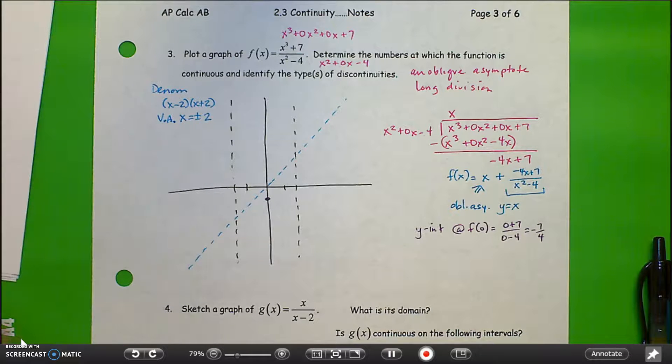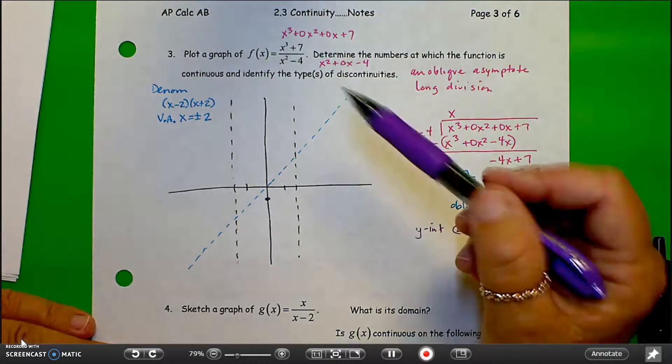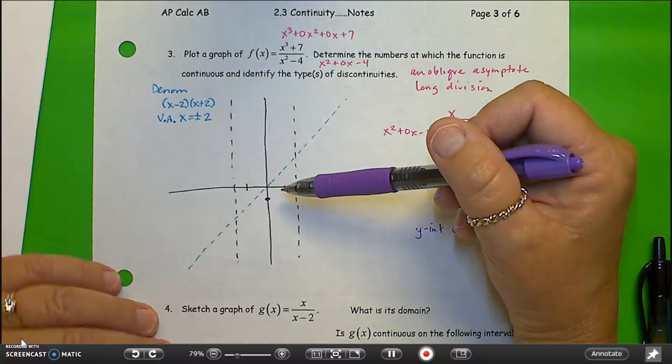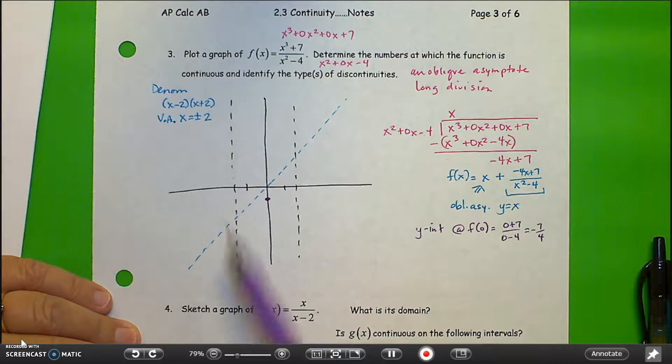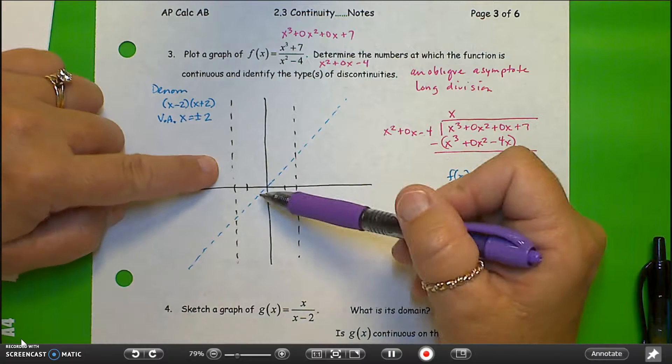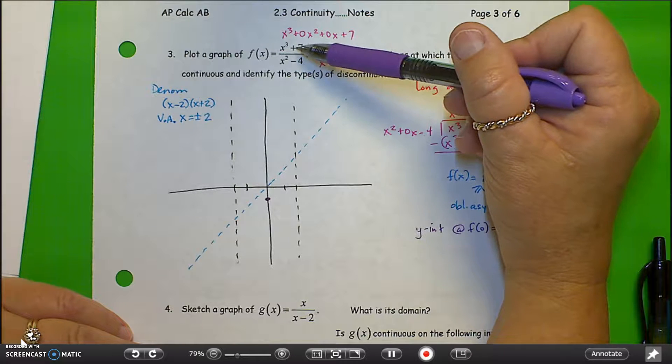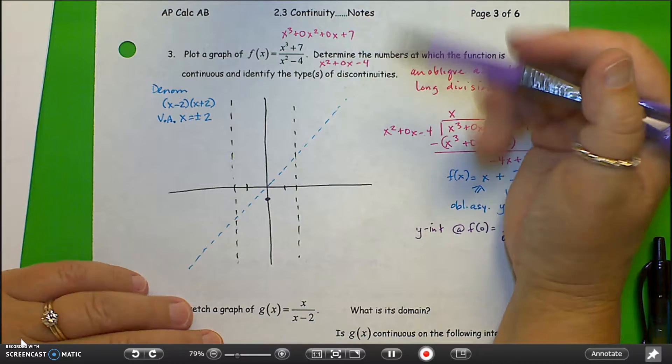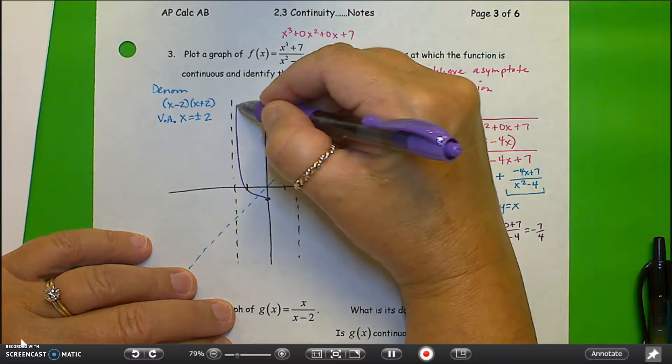We know we have vertical asymptotes at negative 2 and 2. We can look at the limits to the left of 2, the limits to the right of 2, to see where it's approaching, positive or negative. I either have to be populated in here or in here with my graph. I'm going to focus on the center one. If I look at 2 from the left, if I plug in 2 from the left, I get a negative value in the numerator and a negative value in the denominator. So I'm headed toward positive infinity here.